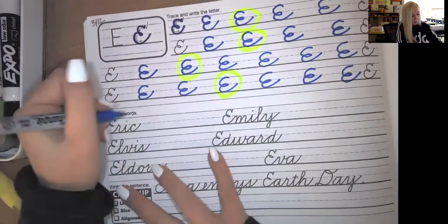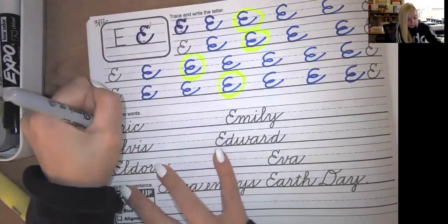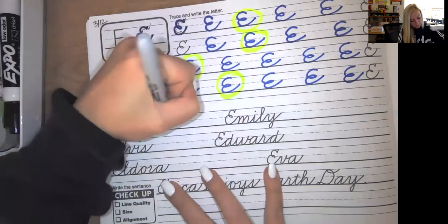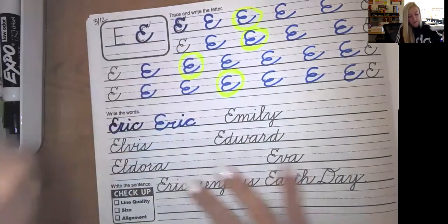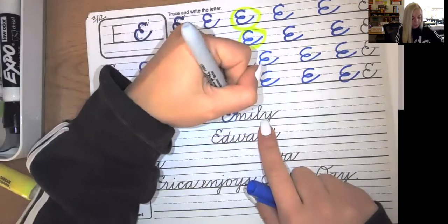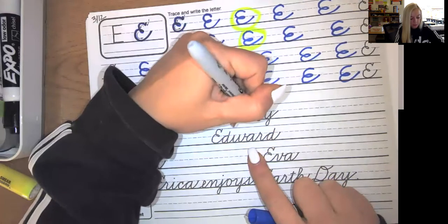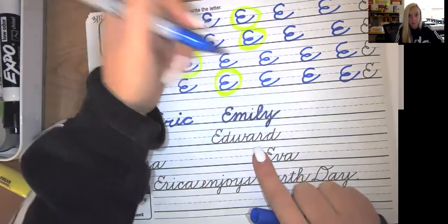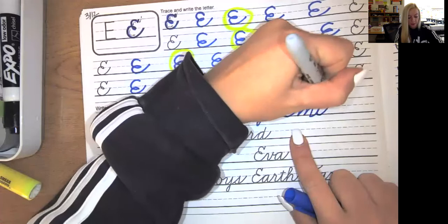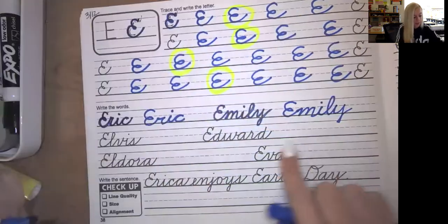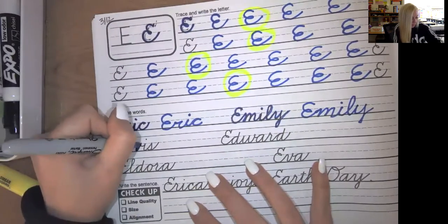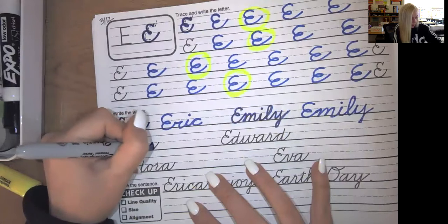We have Eric. So if you want to try to trace Eric first and then you may write it. E-R-I-C, dot your I. Now we have the name Emily. Trace it first for practice. Pick up your pencil. Dot your I. Now let's give it a try. E-M-I-L-Y, dot my I. Elvis, like Elvis Presley. E-L-V-I-S, dot your I.